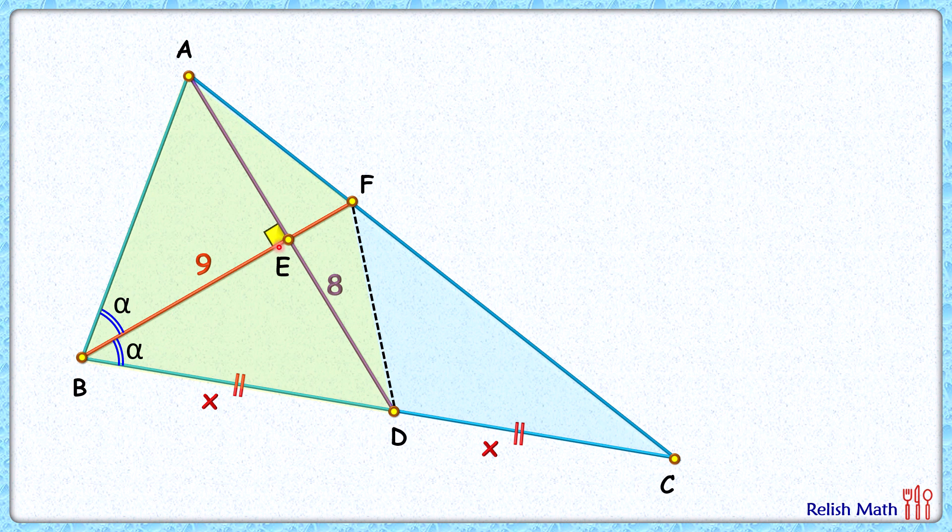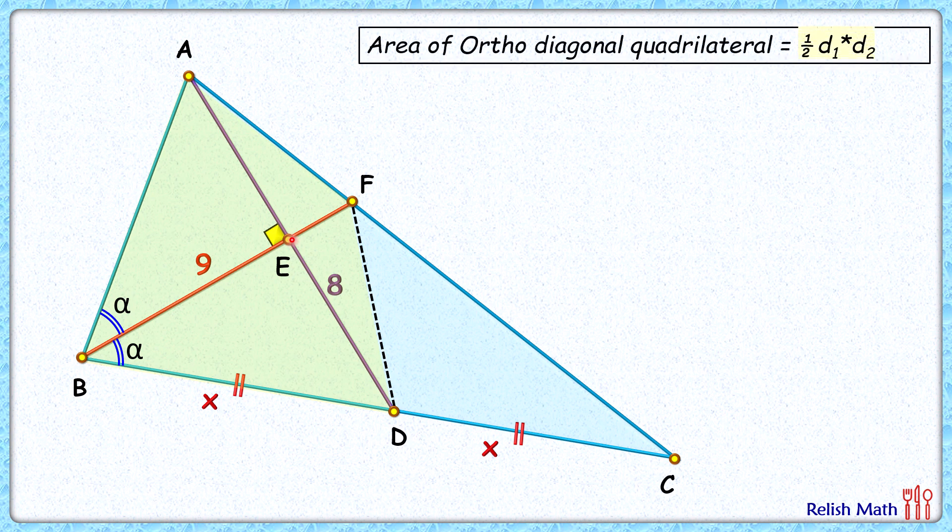Now if you look at this yellow quadrilateral, the diagonals BF and AD are perpendicular to each other. Thus it's an ortho diagonal quadrilateral, and the area of this quadrilateral is given by half of d1 times d2.